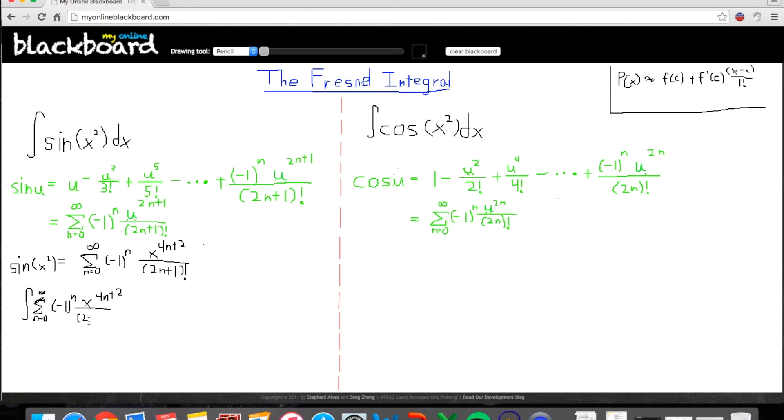Now, this integral is actually very simple to solve, because a lot of these terms are constants. So, we have 2n plus 1 factorial in the denominator. We can take out the summation sign, the negative 1, and the 1 over 2n plus 1 factorial, because they're all constants. And, what we're left with is just x to the 4n plus 2.